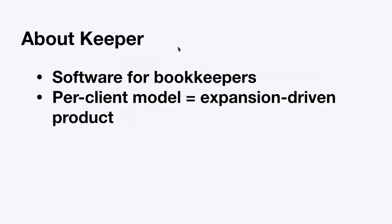A little bit about us — it's relevant to how we built the tool. We're Keeper; we make software to help bookkeepers do their work. If you're familiar with venture-scale firms like Pilot or Bench, we write the same kind of software they use internally, but instead of using it to do bookkeeping, we sell that software to the other 1.5 million bookkeeping firms across the West. We are a per-client model — you pay per client active in Keeper — so we have a very expansion-driven sales motion. A customer might come to us with a hundred clients but start with ten, and getting them from ten to a hundred is a key part of our customer success.